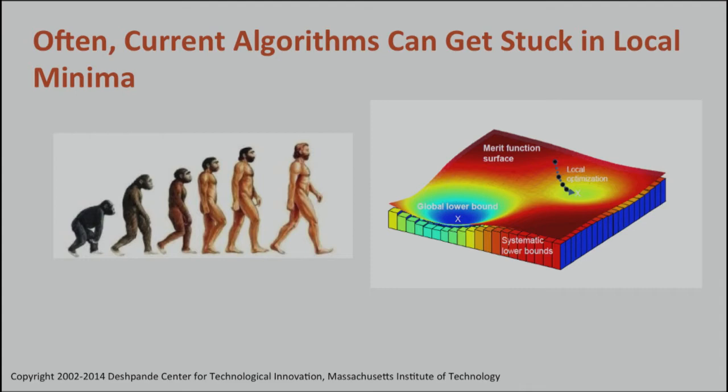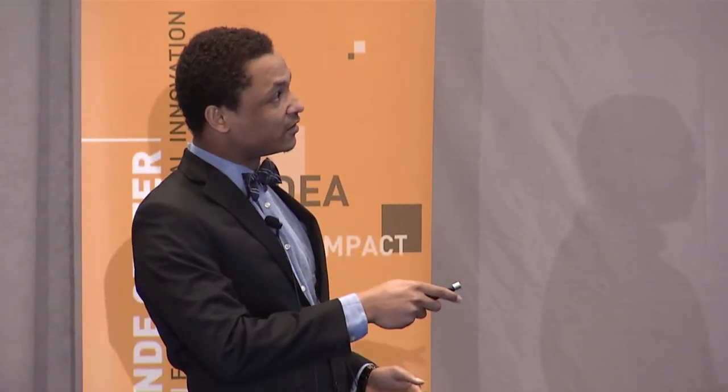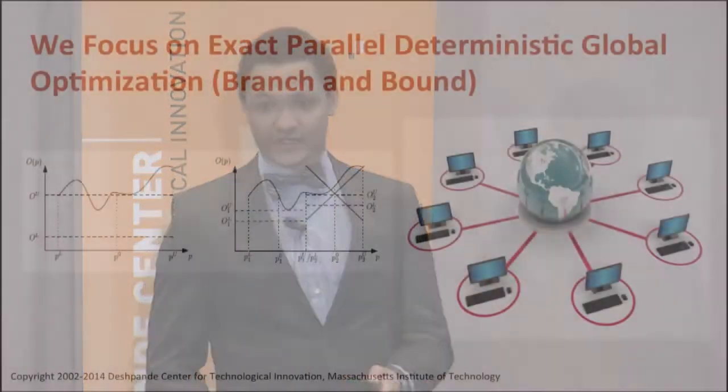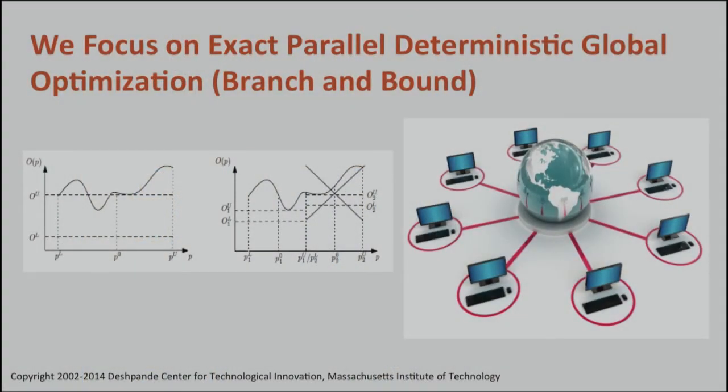This is where our algorithms come in. We will always find the global optimum. We focus on exact parallel deterministic global optimization methods, such as branch and bound. The way these algorithms work is they exhaustively and intelligently search the entire search space using massive amounts of computational power. These ideas are not new — they have been known for about half a century. However, it's only recently that advances have been made that have moved this from an obscure technique relegated to a few special applications to the mainstream.